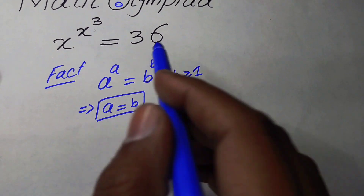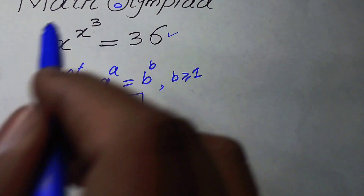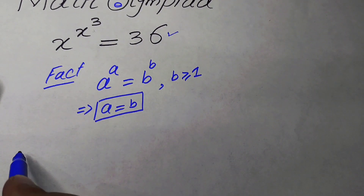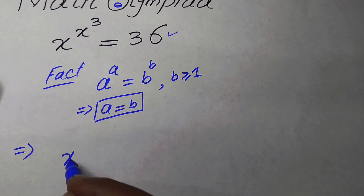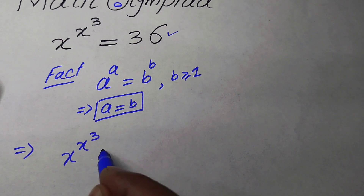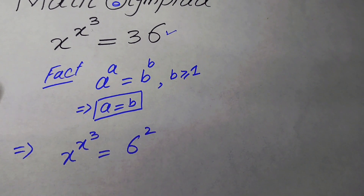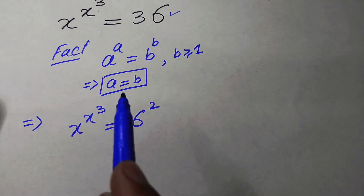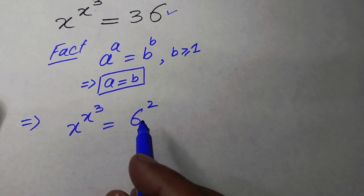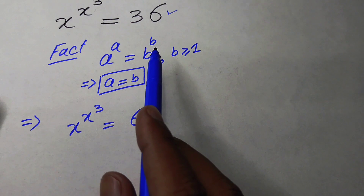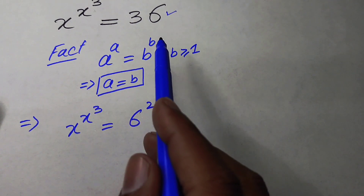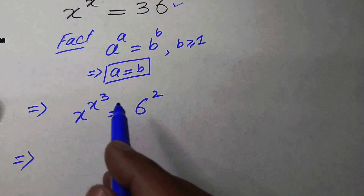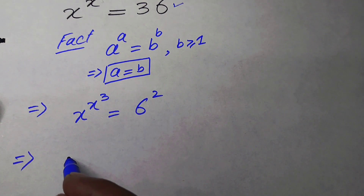The first thing we will do with this exponential equation is rewrite 36 as 6 to the power of 2, since the square of 6 is 36. After that, we make both the base and exponent on both sides the same. To do this, we take the cube on both sides.